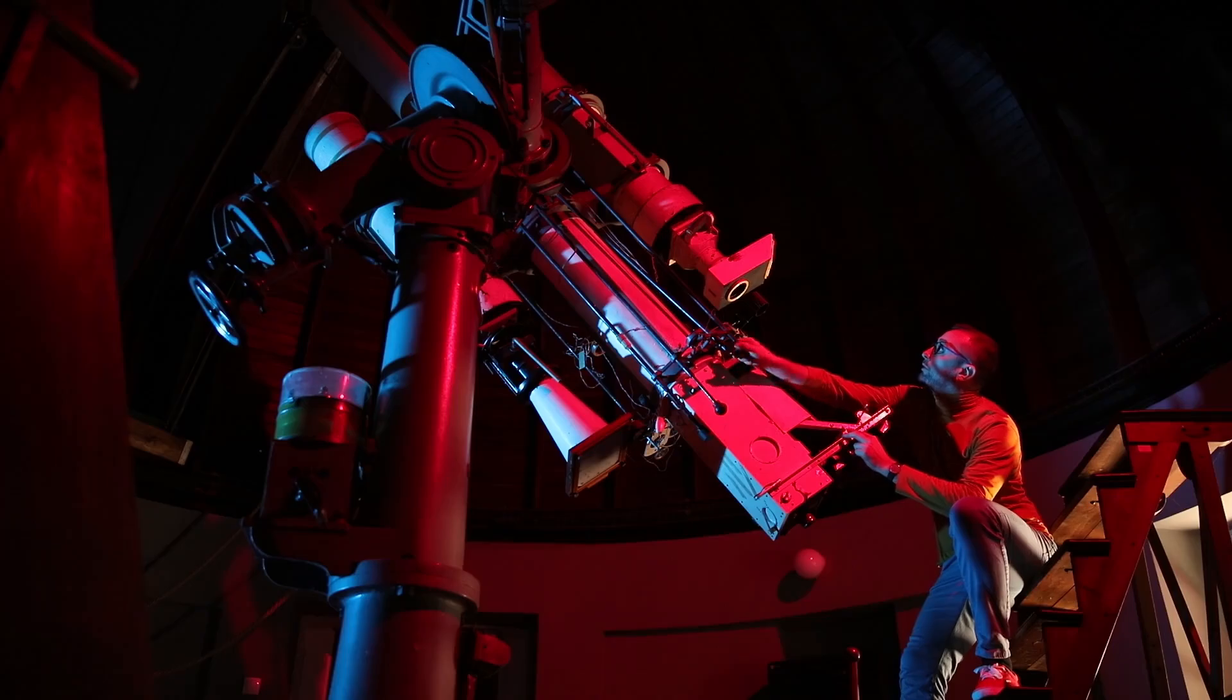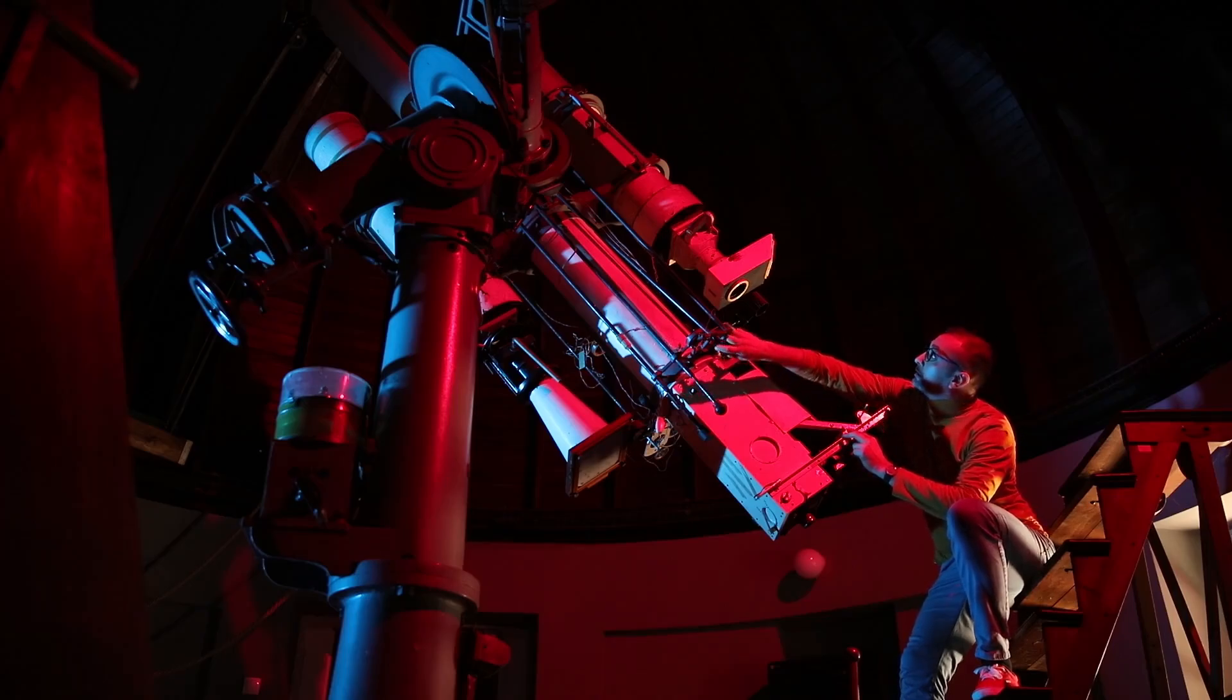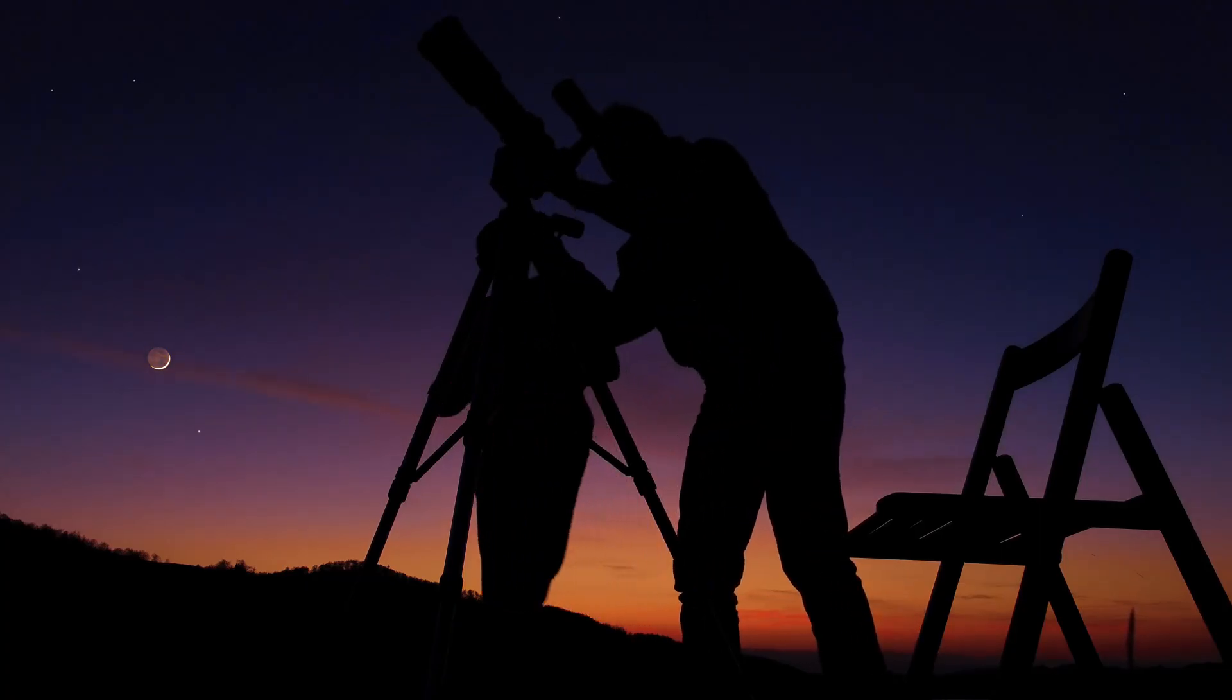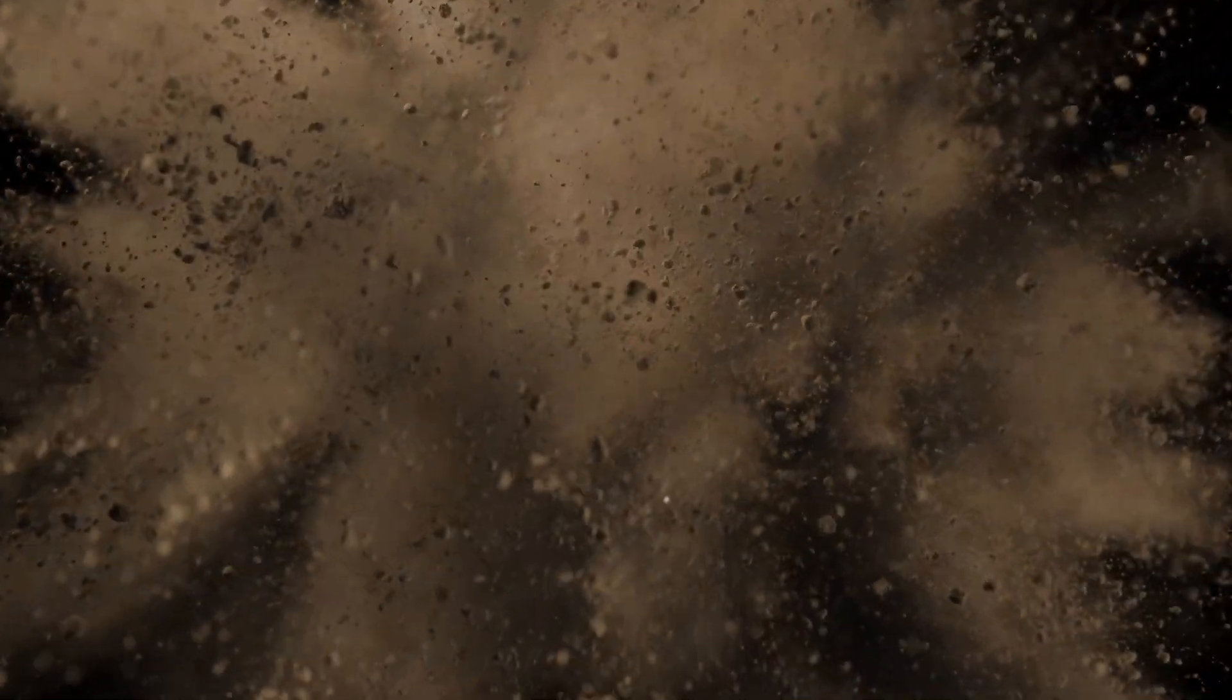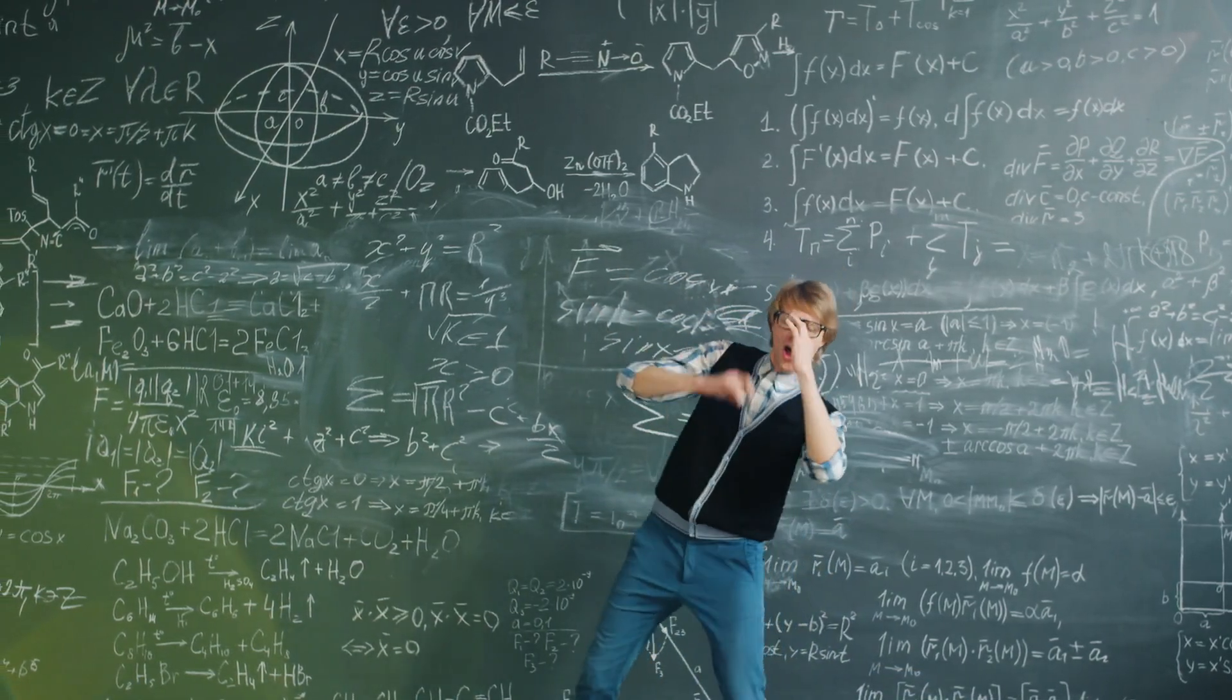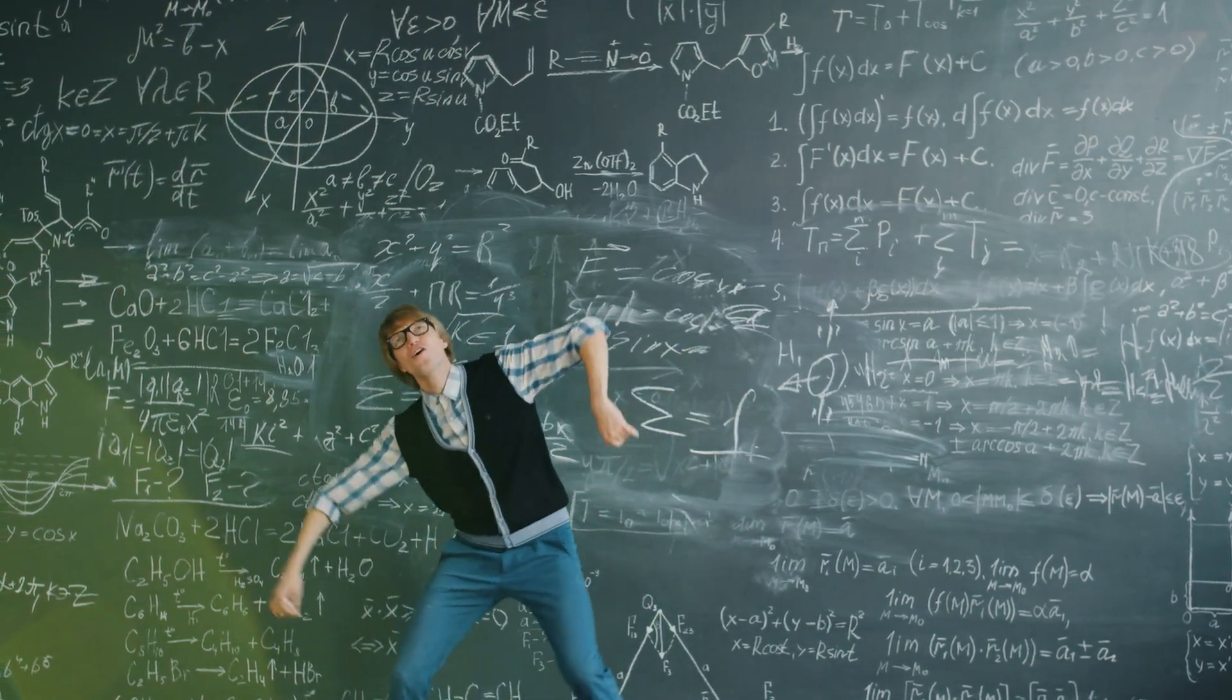The dimming of Betelgeuse was a once-in-a-lifetime event for astronomers. It allowed us to study Betelgeuse in ways we couldn't before. While the dust cloud theory was the most accepted explanation, it was still an exciting time for the astronomy community. We had the chance to witness the dynamic nature of these celestial bodies.